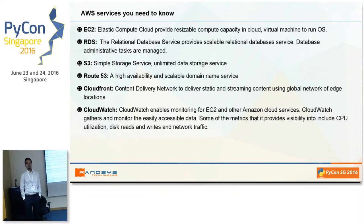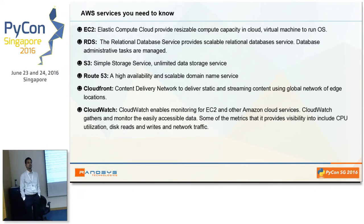The basic one is EC2. EC2 is a virtual machine in the cloud where you can host your operating system and install your application. This is the basic service you must use to host your application on AWS.